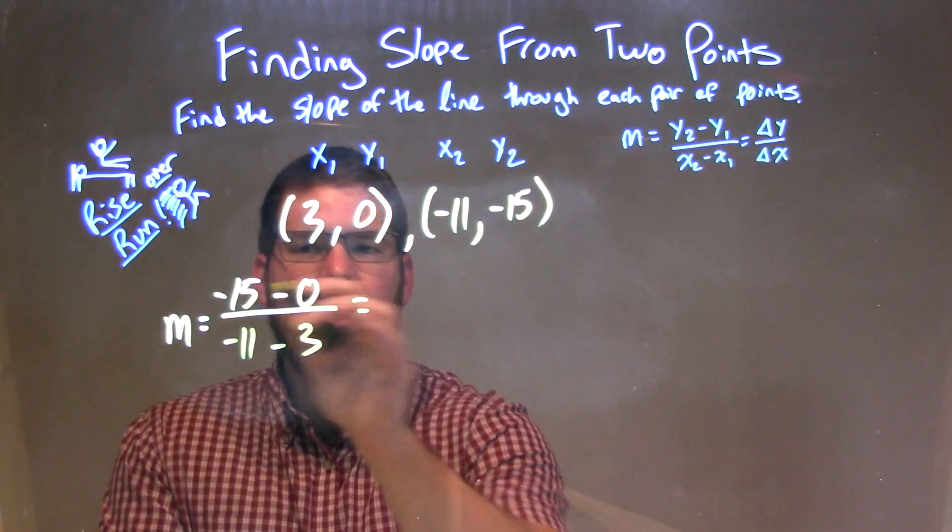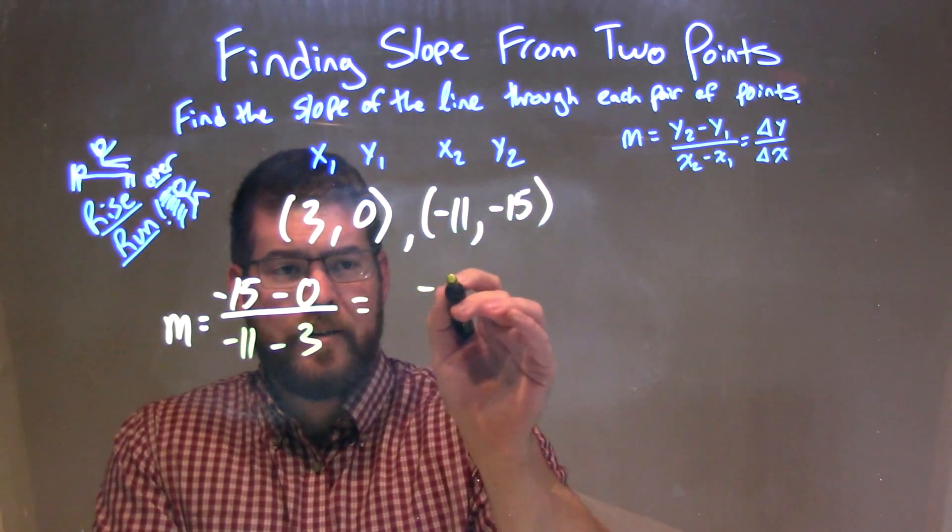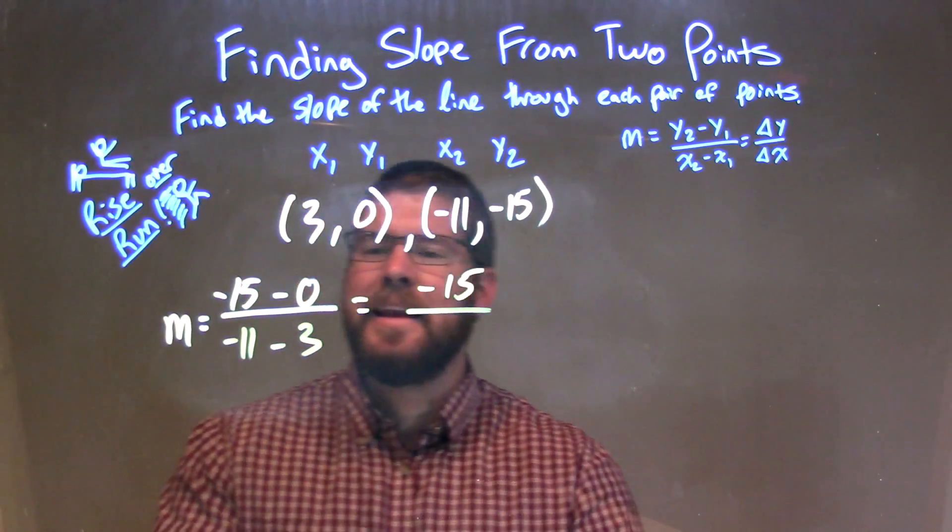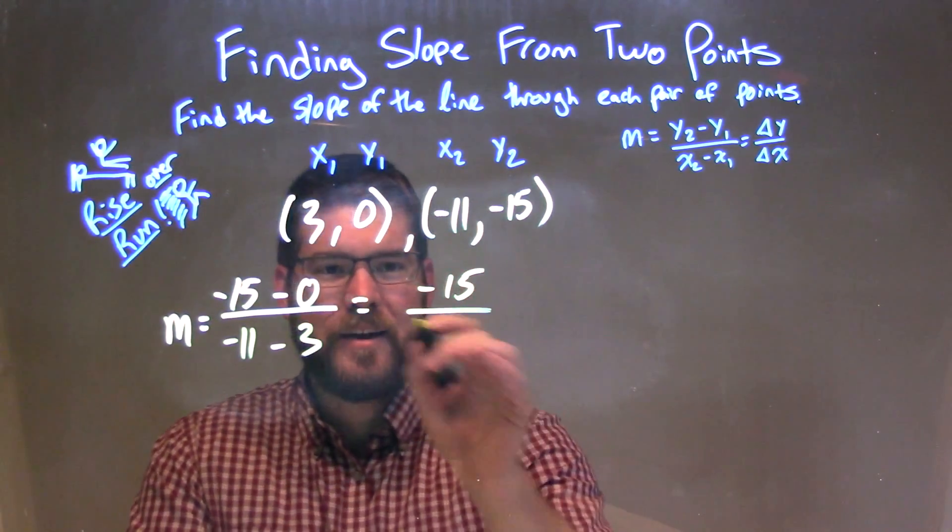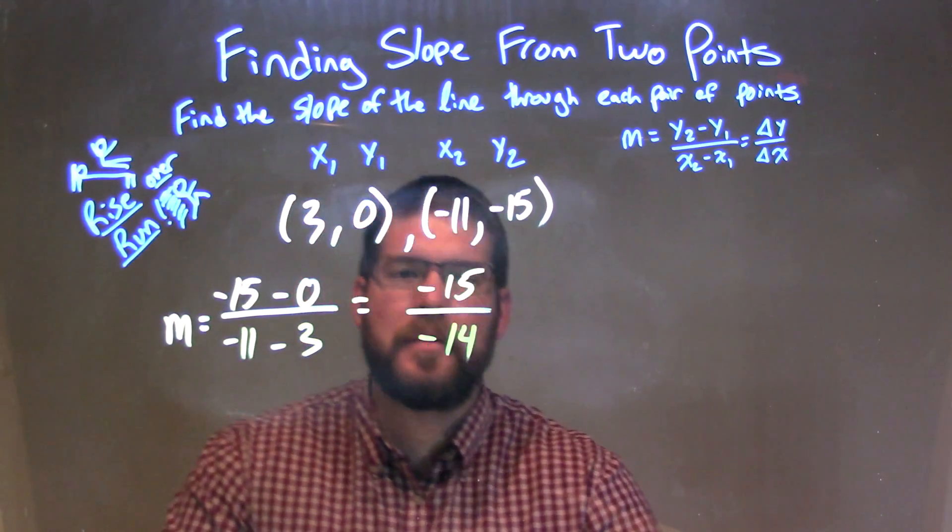The numerator is pretty easy to simplify. Negative 15 minus 0 is negative 15. And negative 11 minus 3 is the same thing as negative 11 plus negative 3, so we have negative 14.